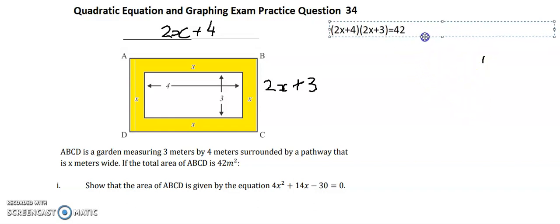So now we just need to expand. When I'm expanding, I'm multiplying 2x by everything in the other bracket. So I've got 2x times 2x equals 4x squared, and then I've got 2x times 3 equals 6x, and then I've got 4 times 2x equals 8x, and finally I've got 4 times 3 equals 12.